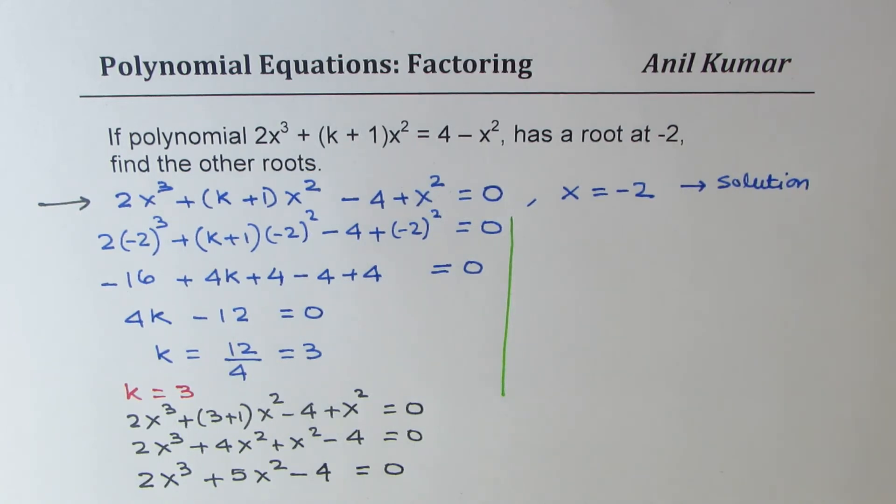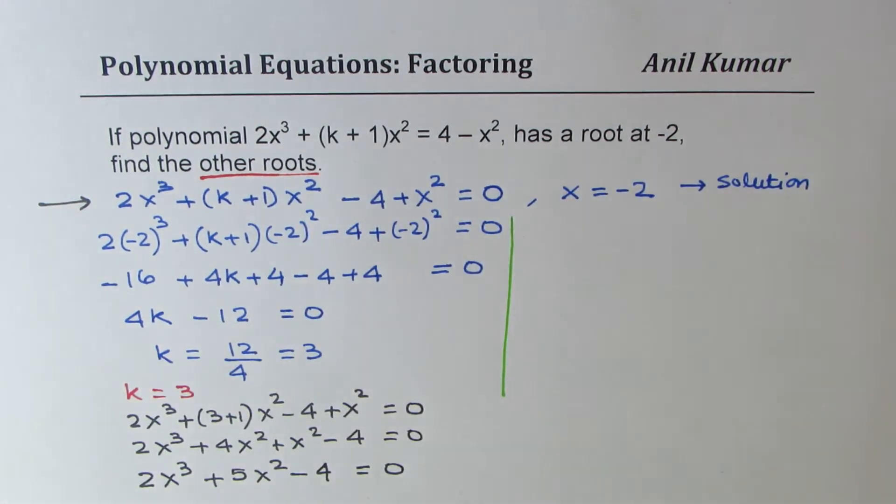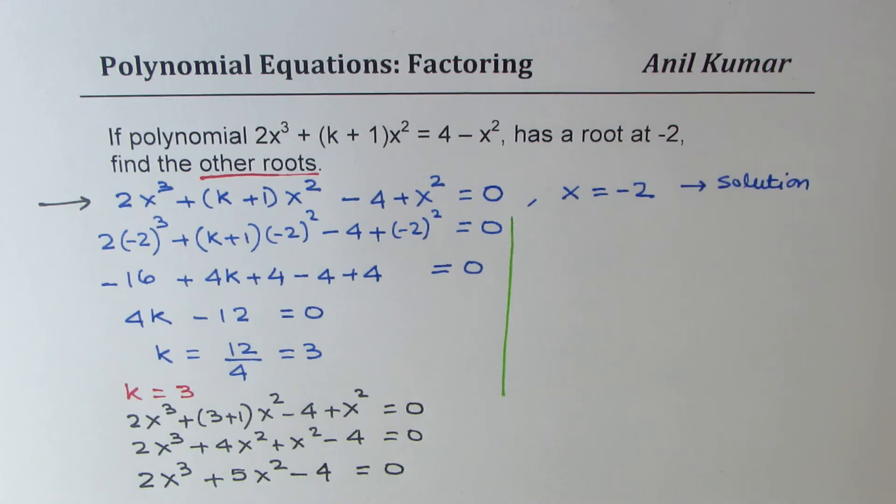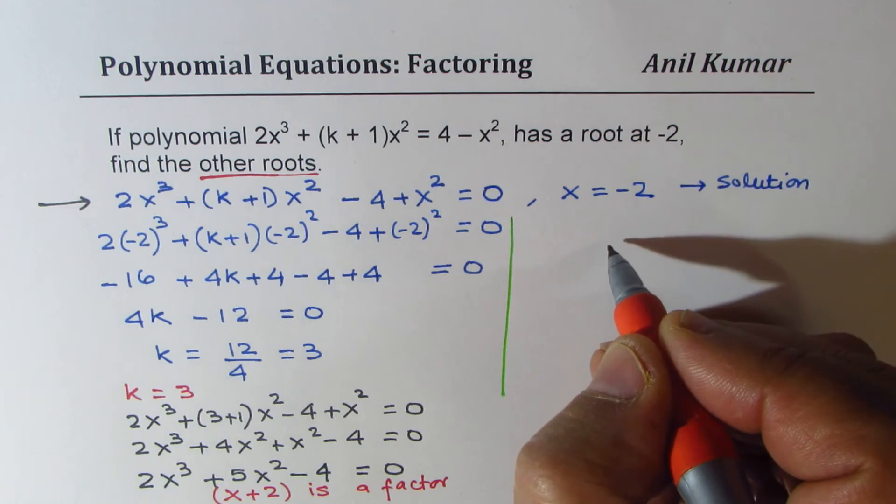Now, we need to find other roots. So this is part 2. We need to find other roots. So we know one root is at x equals to -2. So that means x + 2 is a factor. So we can find the quadratic equation by long division. So let's find the quadratic equation now.